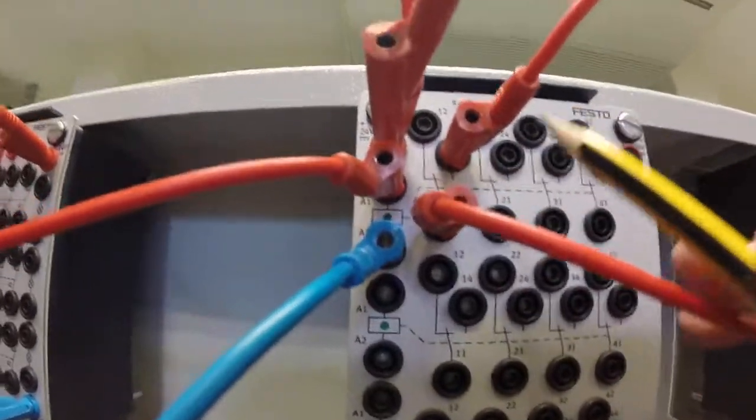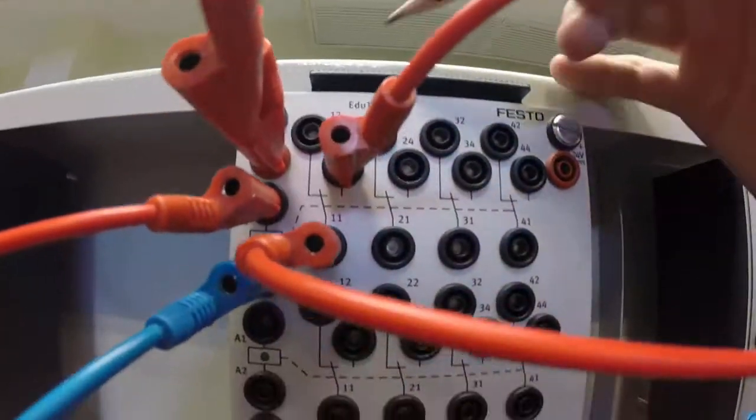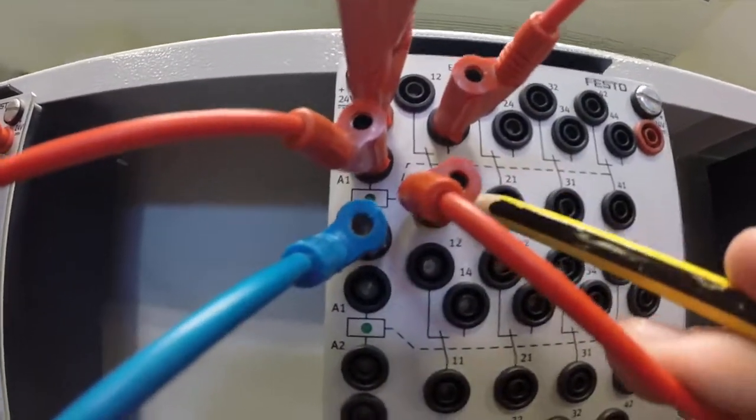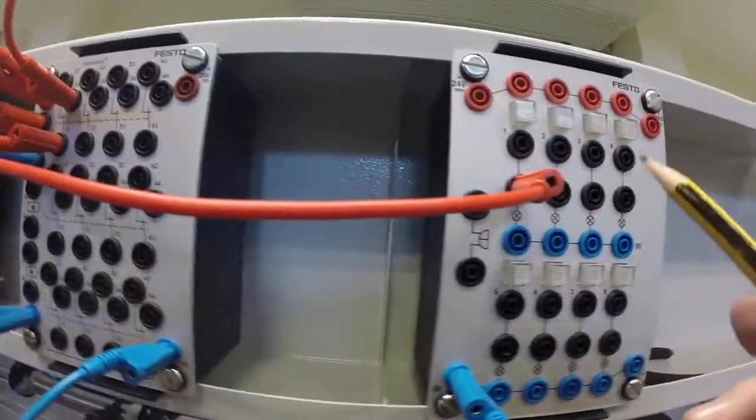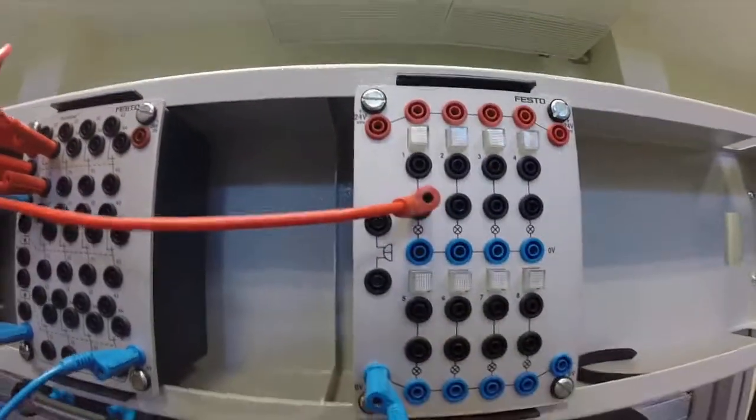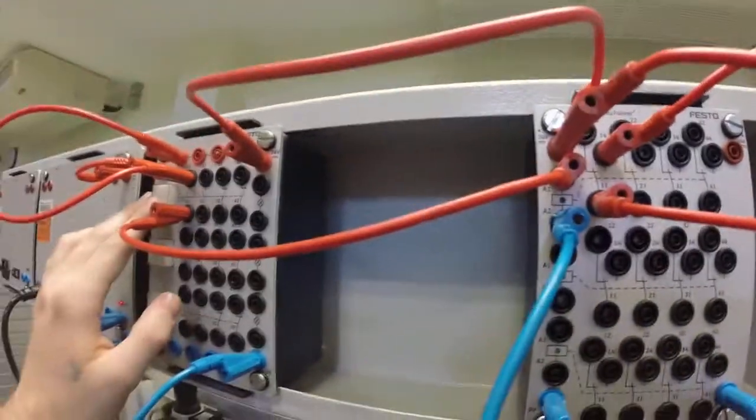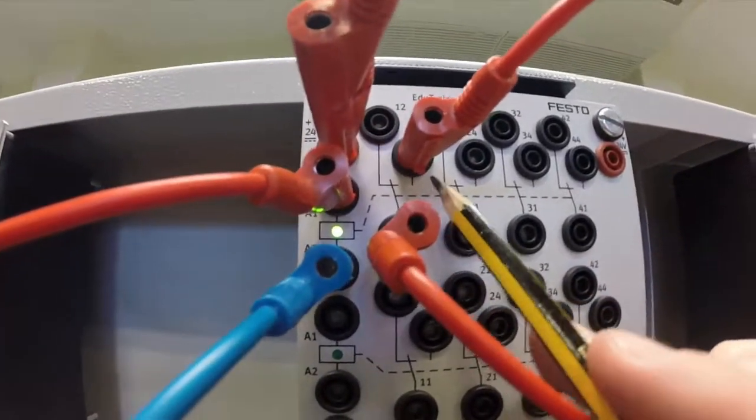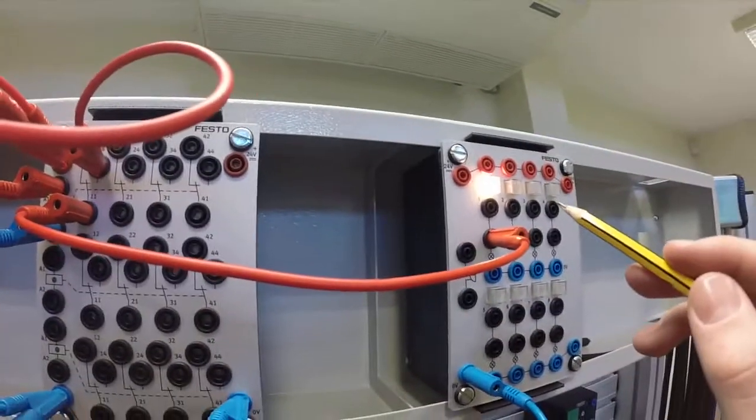What we're doing with the contacts of the relay is we have got contact number 14. So a normally open contact is being connected into 24 volts. And then the other end of the normally opened, the 11, is going into our output over here, which is our light. And then that is getting grounded out. So we have another closed loop there. So you'll see once we operate the switch, the relay contacts will have crossed over. So now the connection will be between 11 and 14 and the light will come on.